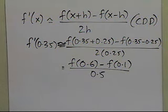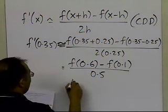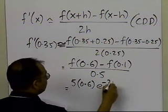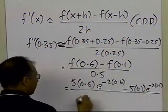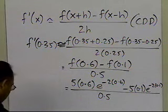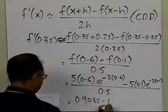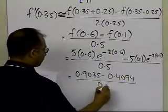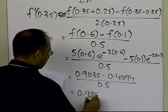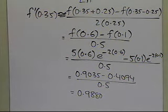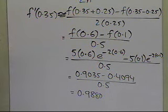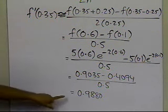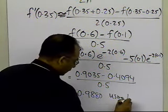Evaluating the function: f(0.6) = 5 × 0.6 × e^(−2 × 0.6) and f(0.1) = 5 × 0.1 × e^(−2 × 0.1). This gives us 0.9035 minus 0.4094, divided by 0.5, which turns out to be 0.9880. I'm using four significant digits to keep the calculations clean. So the derivative at 0.35 using h = 0.25 is approximately 0.9880.